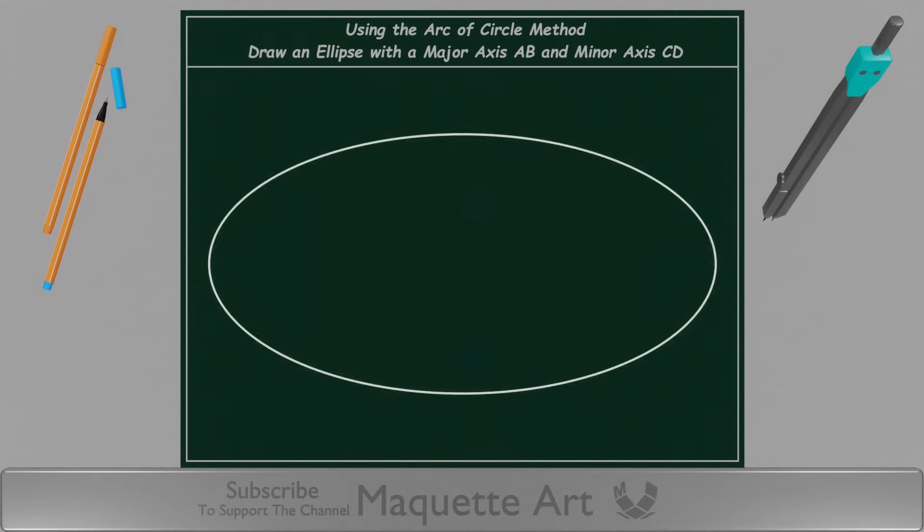Using the arc of circle method, draw an ellipse with a major axis AB and minor axis CD.